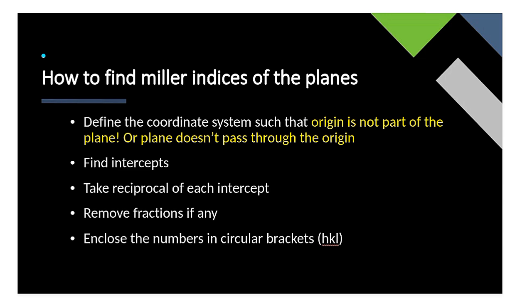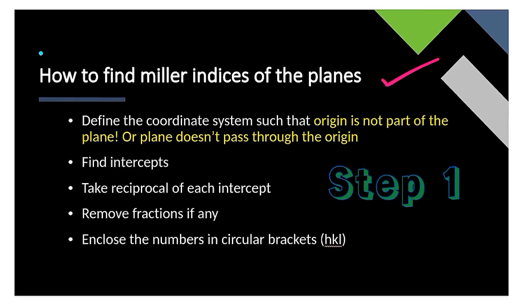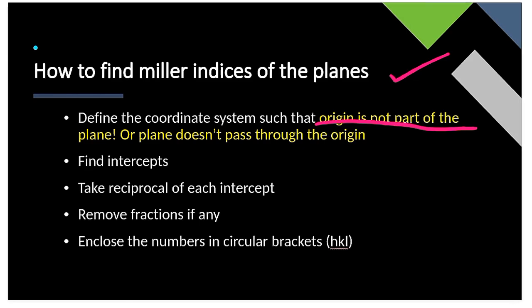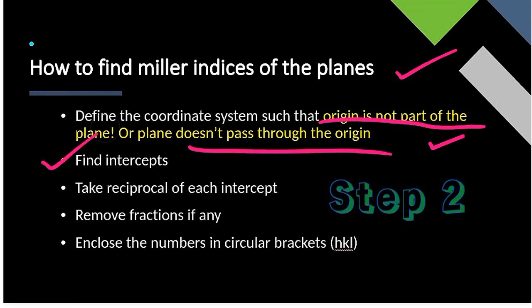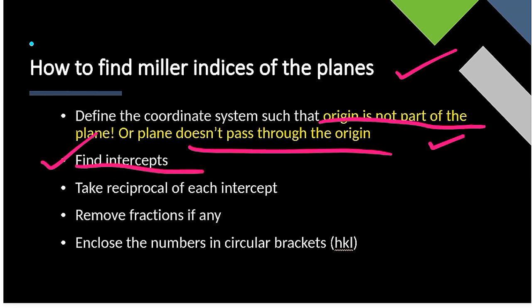First, let's look at the steps we are going to follow. The first step is to define the coordinate system such that the origin is not part of the plane — we have to select an origin such that the plane doesn't pass through it. The second step is to find out the intercepts that the plane makes with the coordinate axes, which is the central calculation of the whole process.